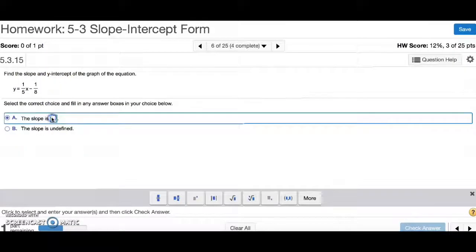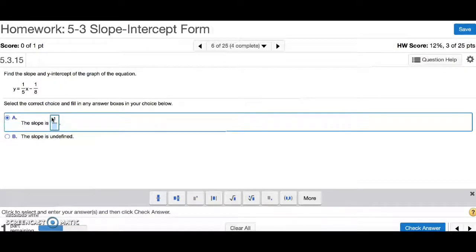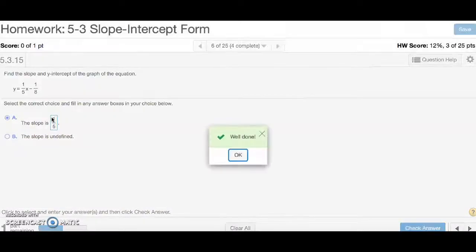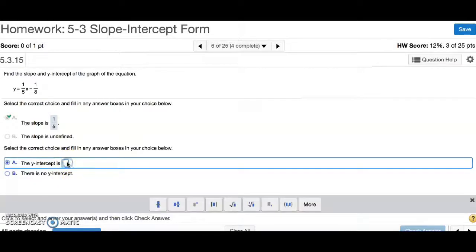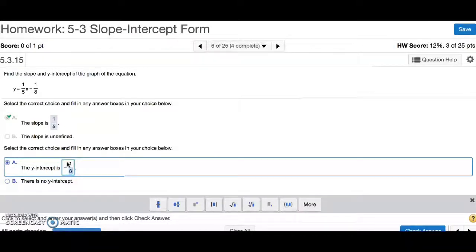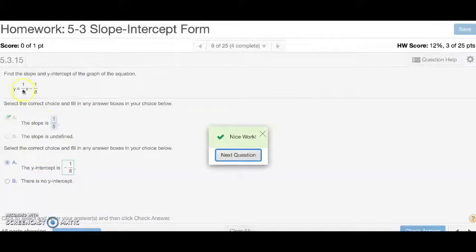Number 6, the slope is the number in front of x, so 1 over 5. And the y-intercept is negative 1 over 8, include the negative. And that's number 6.